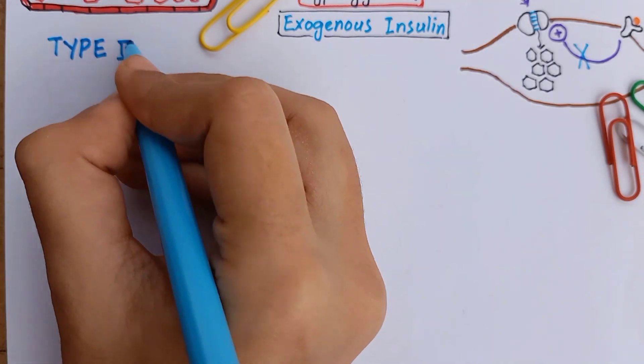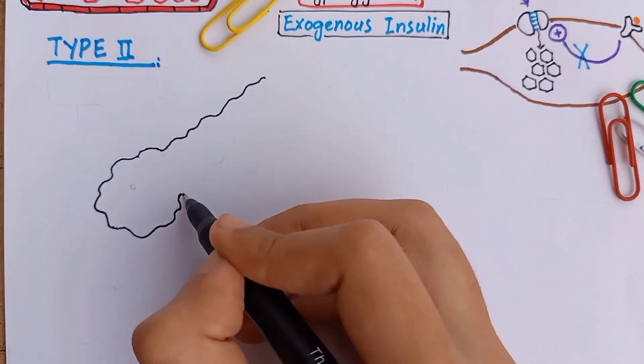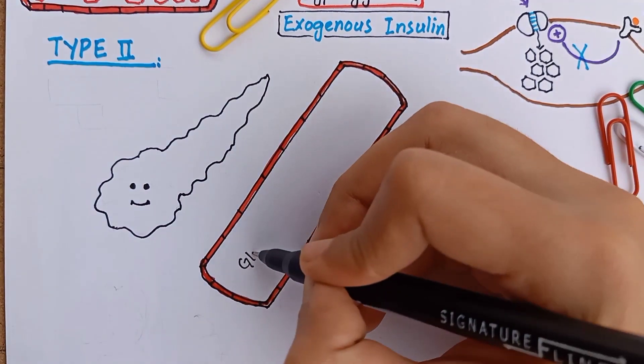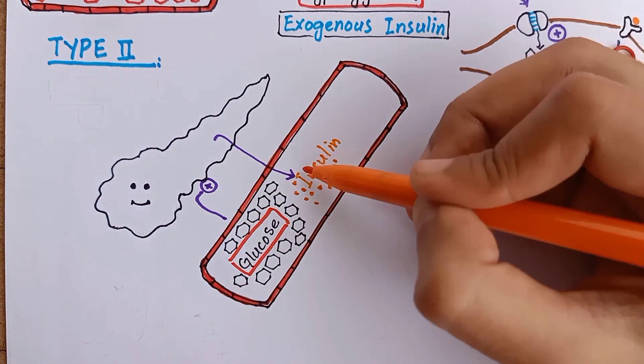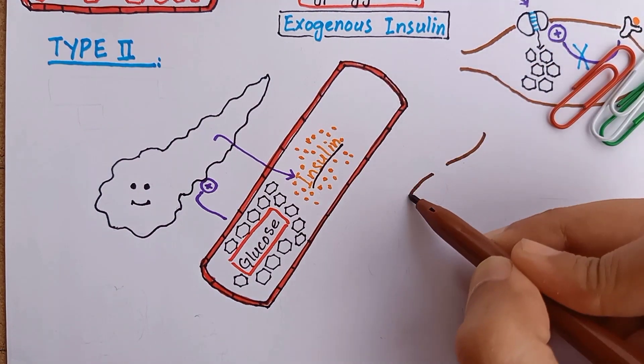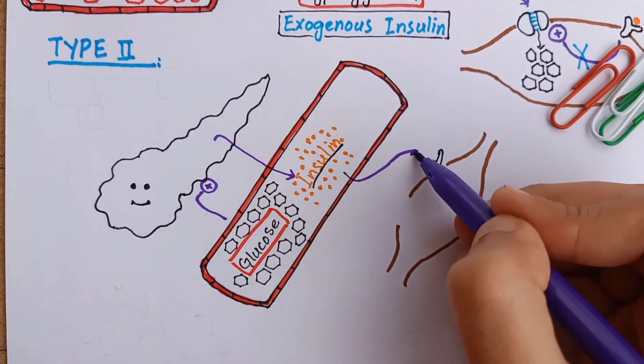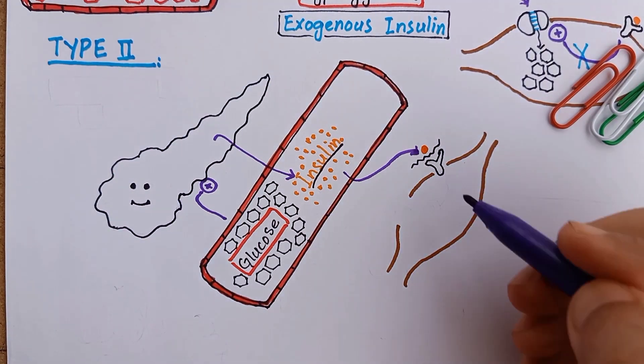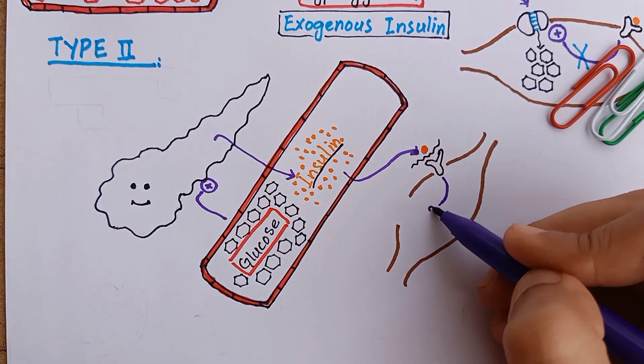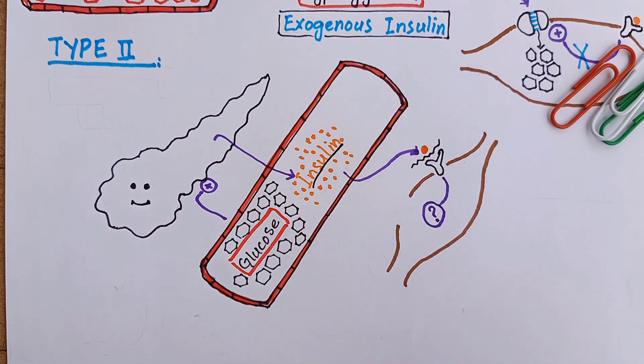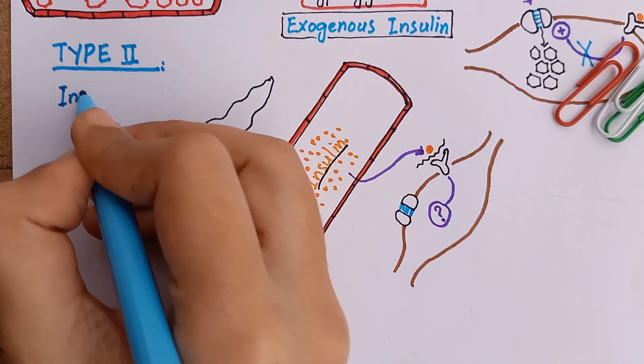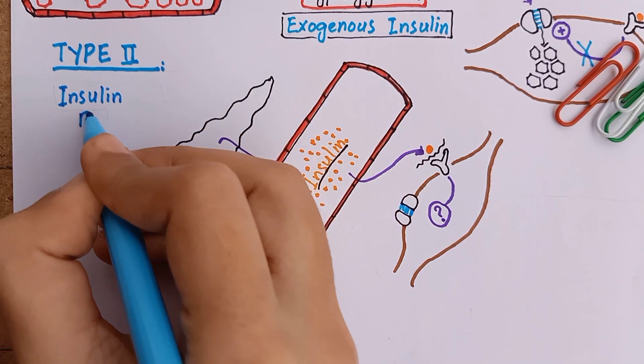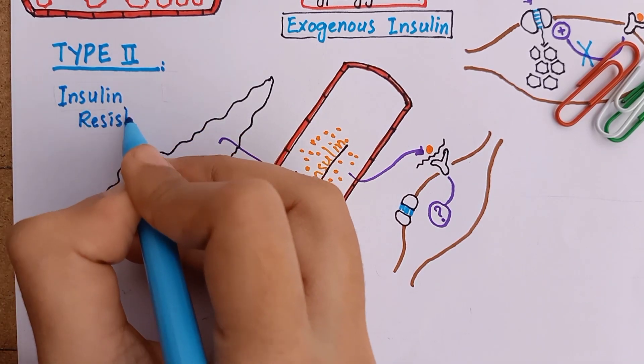In type 2 diabetes, the pancreatic beta cells are perfectly healthy and produce enough insulin in response to blood glucose. But the problem is, this insulin is either unable to attach to its receptors on target cells, or the target cells do not respond to insulin binding. Therefore, cells cannot import glucose and glucose stays in the blood. In other words, type 2 diabetics are insulin resistant.